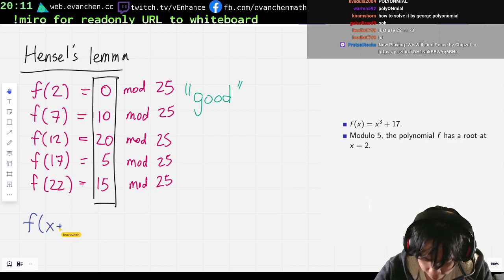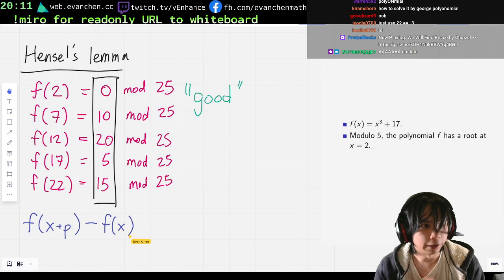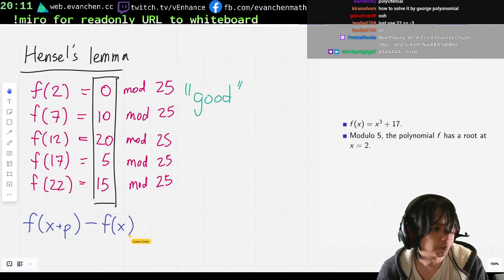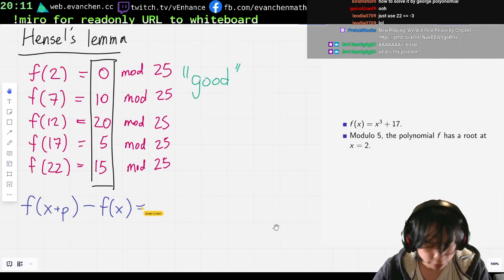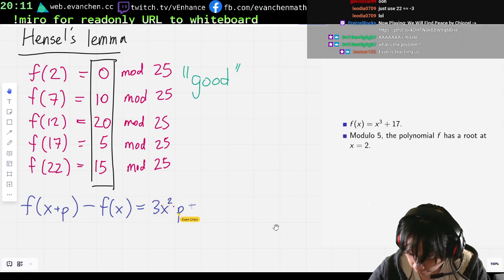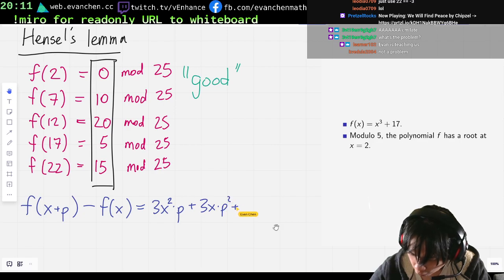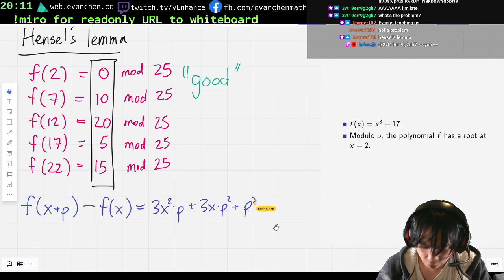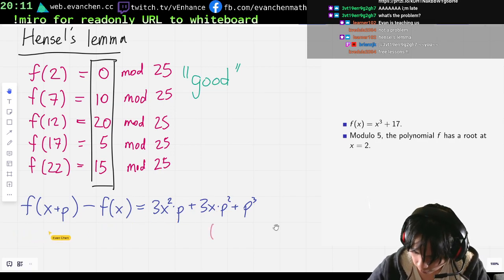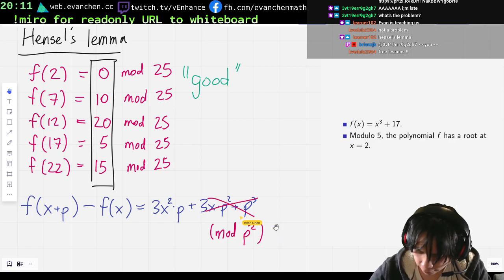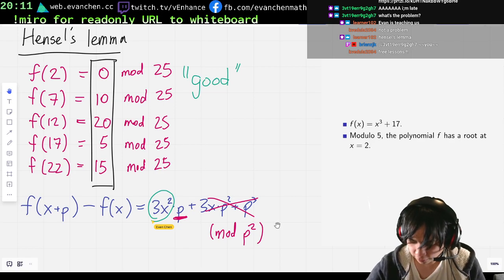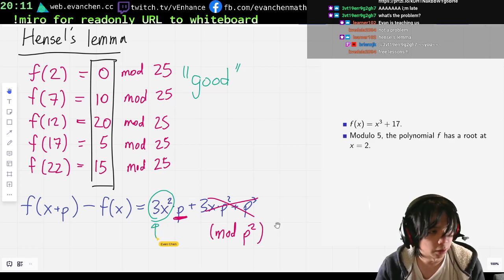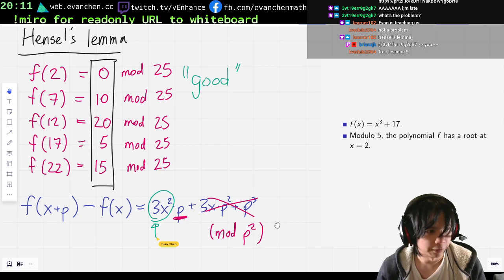Well, let's just say in general f of x plus p minus f of x. I'll evaluate it for this specific polynomial. But the same calculation will just hold in general. But 17's cancel out. And I will get something like 3x squared times p plus 3x times p squared plus p cubed. And if I only care about things modulo p squared, this stuff all goes away. So I only care about the terms that have a single p here. And this is some number. And this number is always a certain thing. Well, for our special case where x is always 2 mod 5, this will always be 12 mod 5.